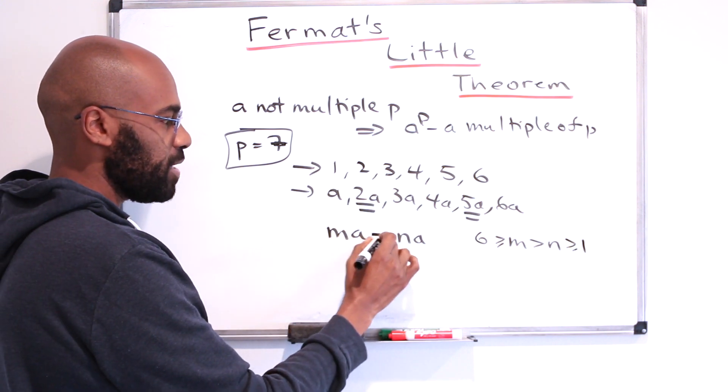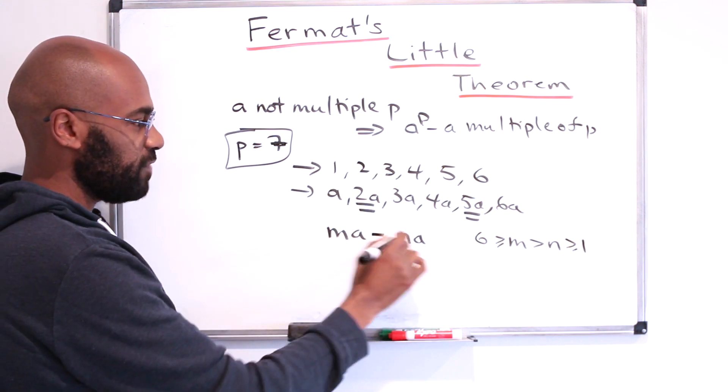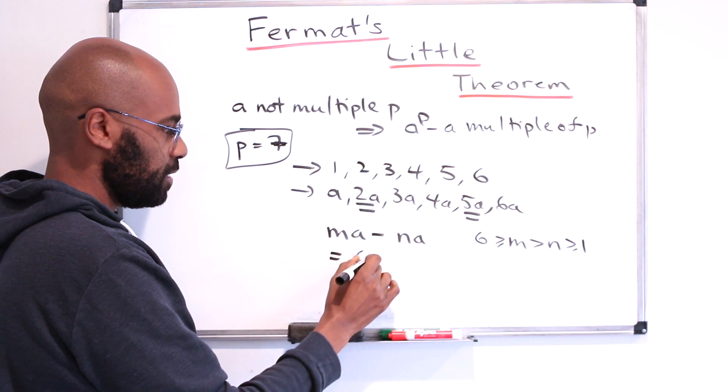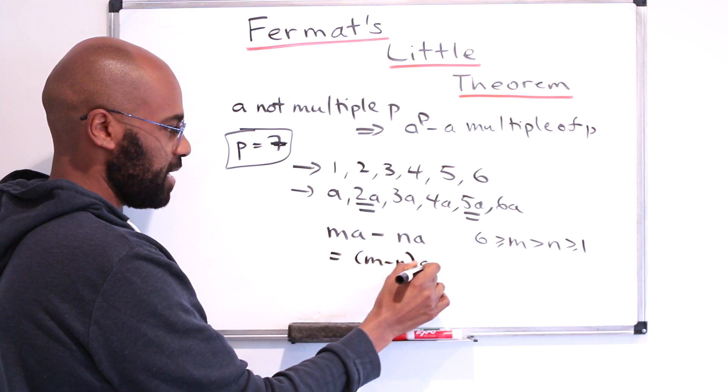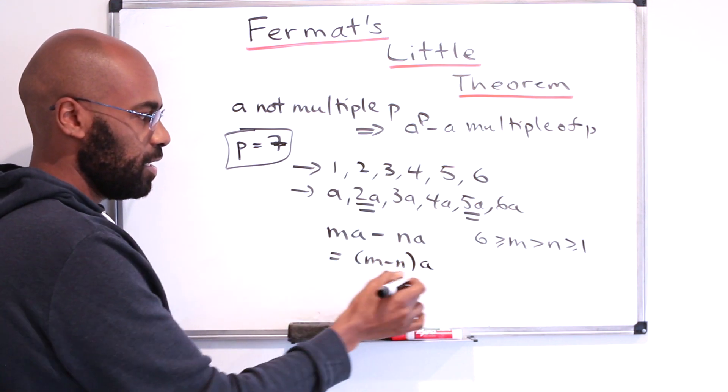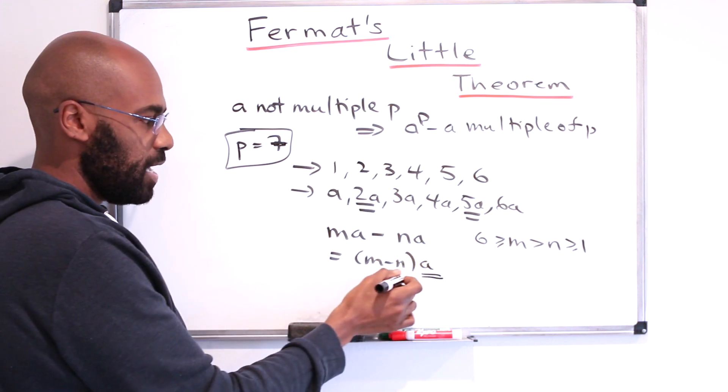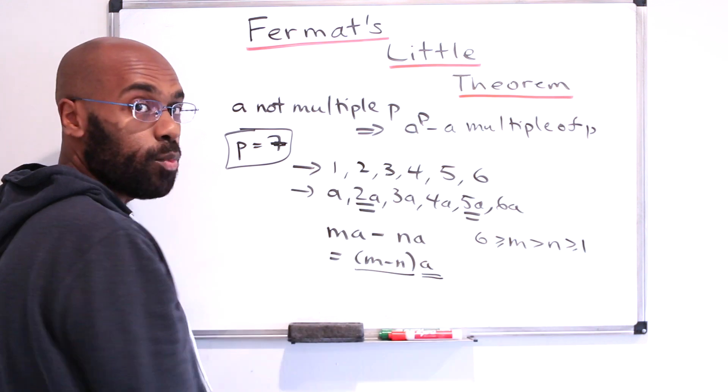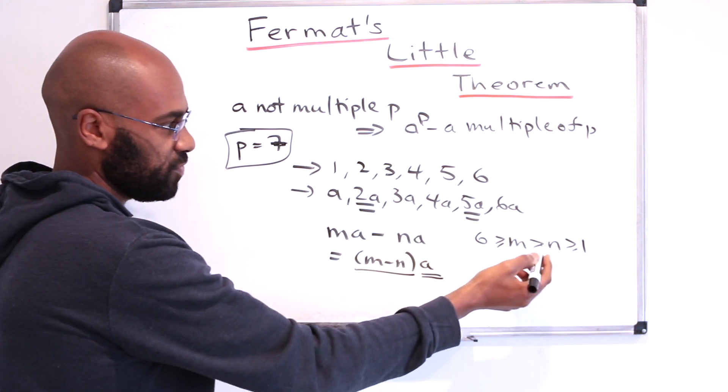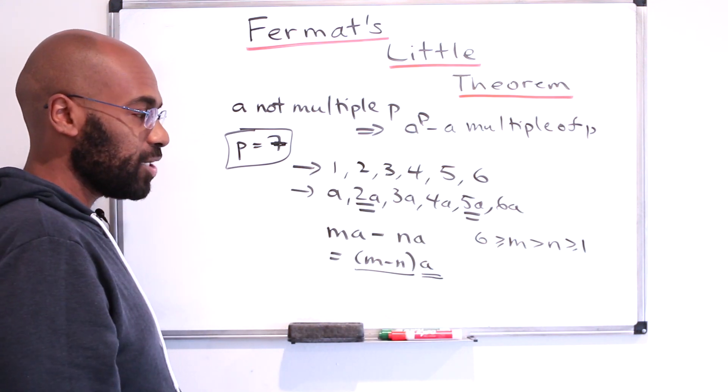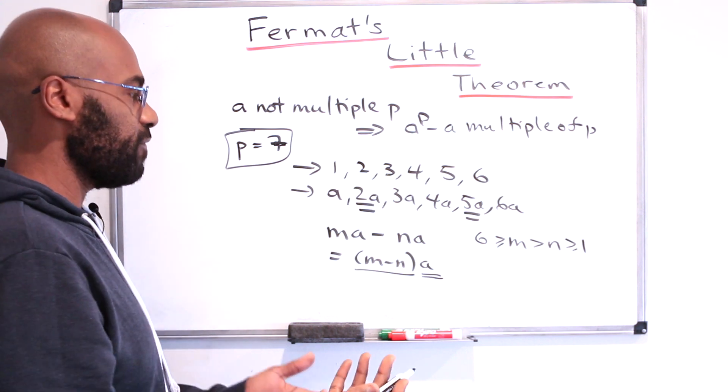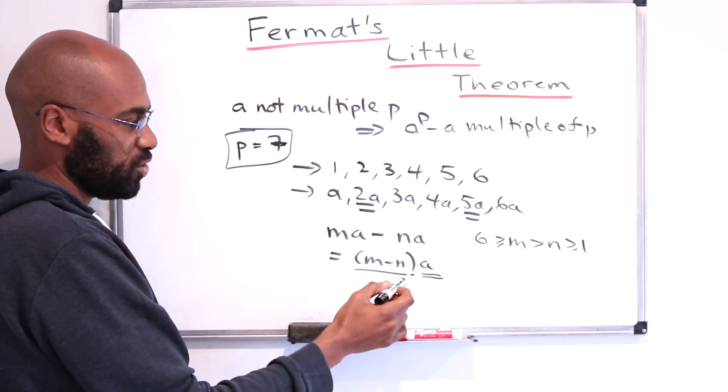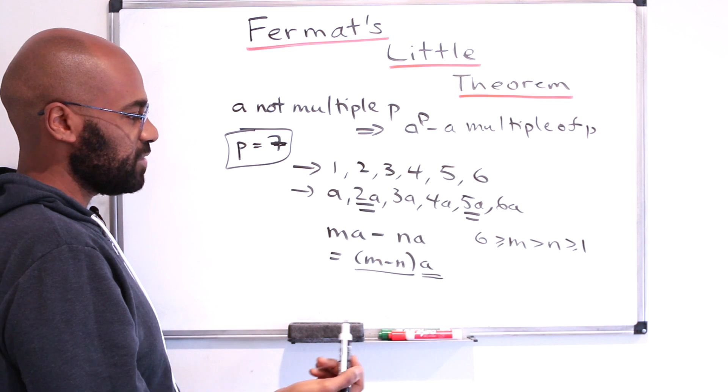So if they left the same remainder when you divide by 7, their difference would be divisible by 7, which would mean m minus n times a is divisible by 7. But this thing has no multiple of 7 in it, and this number is between 6 and 1, because it's the difference of two numbers between 6 and 1. It's actually no bigger than 5, but that doesn't matter. The point is it's too small to be a multiple, to have a factor of 7 in it.